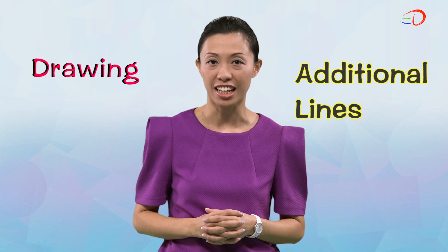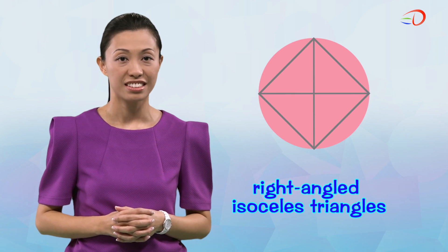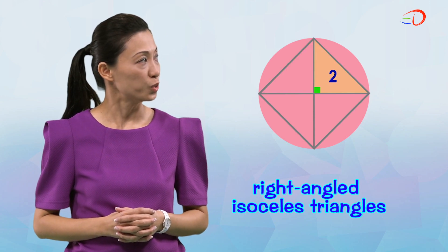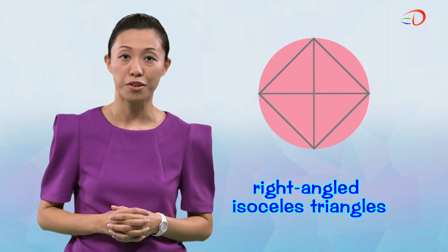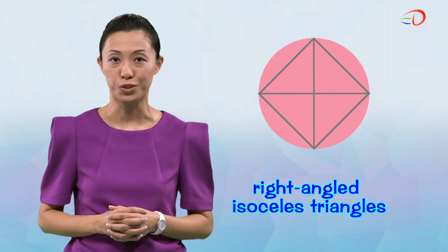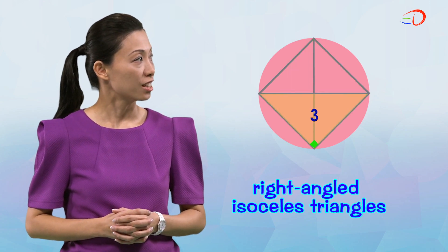Do you know that we can find right-angled isosceles triangles in circles too? We can do this by drawing additional lines. Let me show you. Can you see right-angled isosceles triangles now? One, two, three, and four. And there are four bigger right-angled isosceles triangles too: one, two, three, and four.